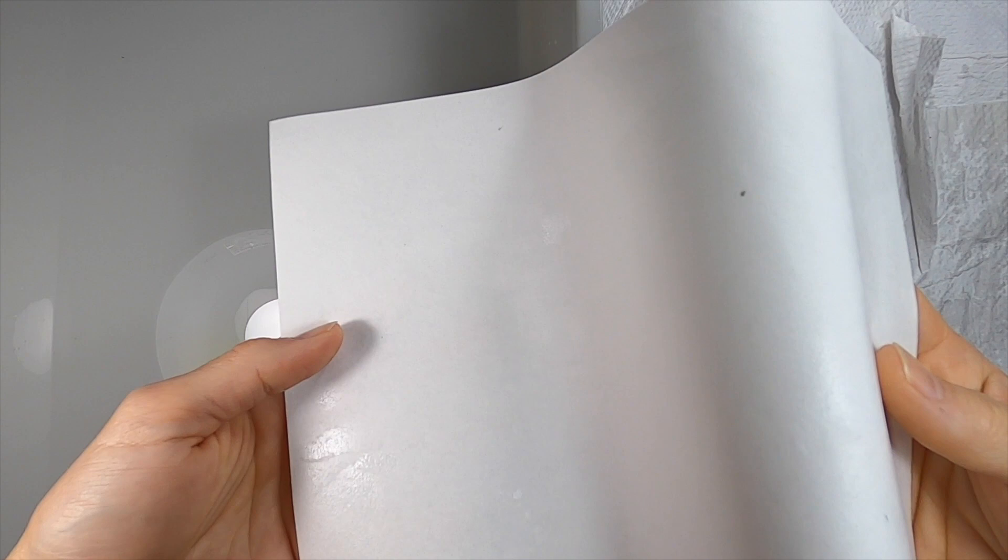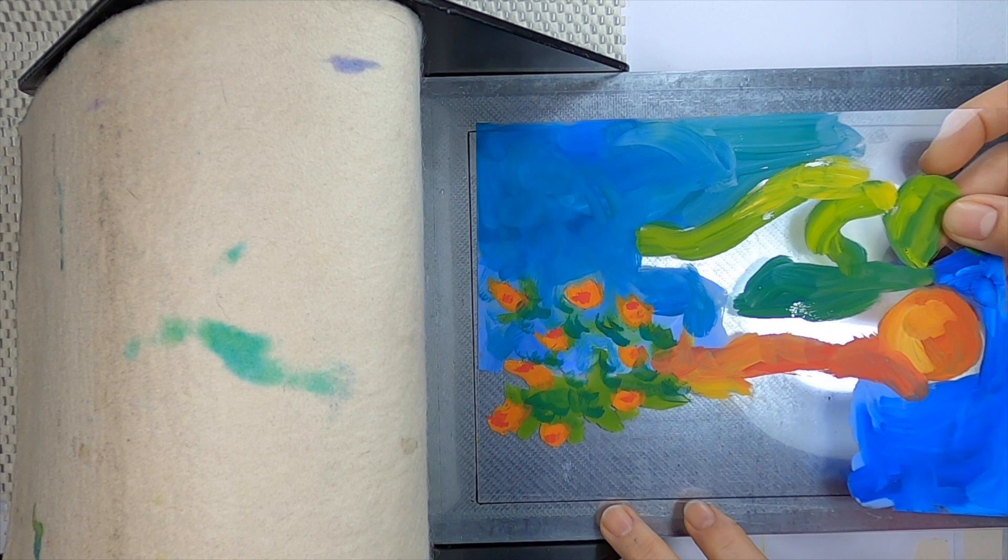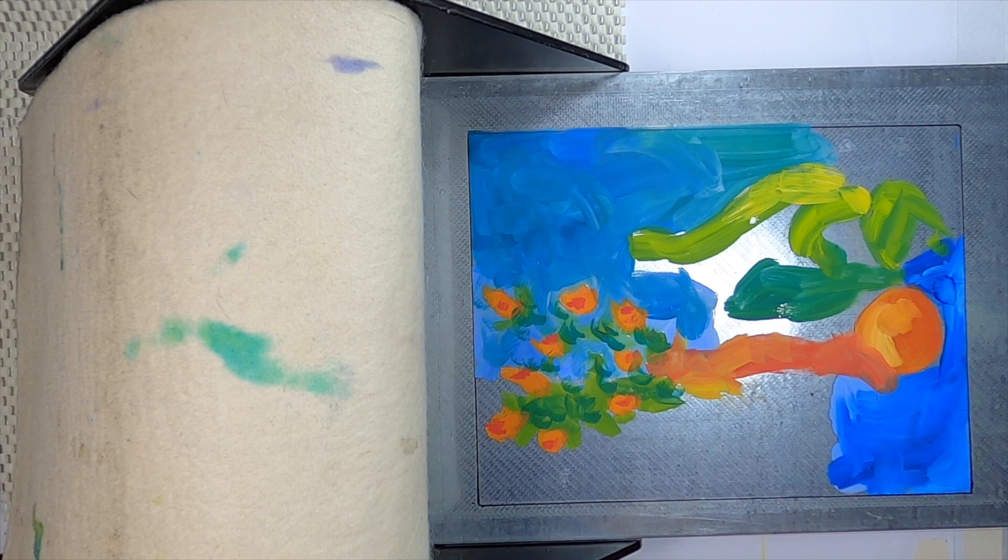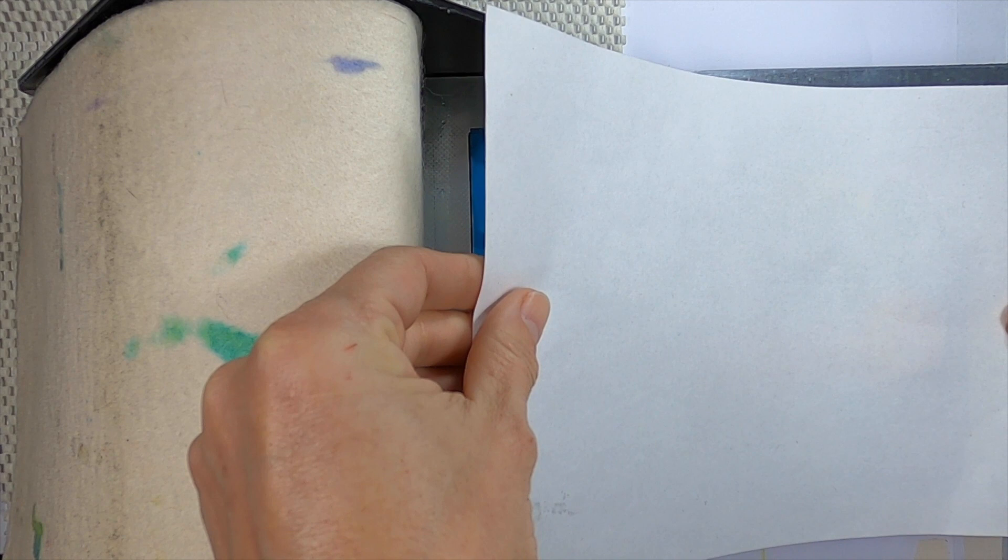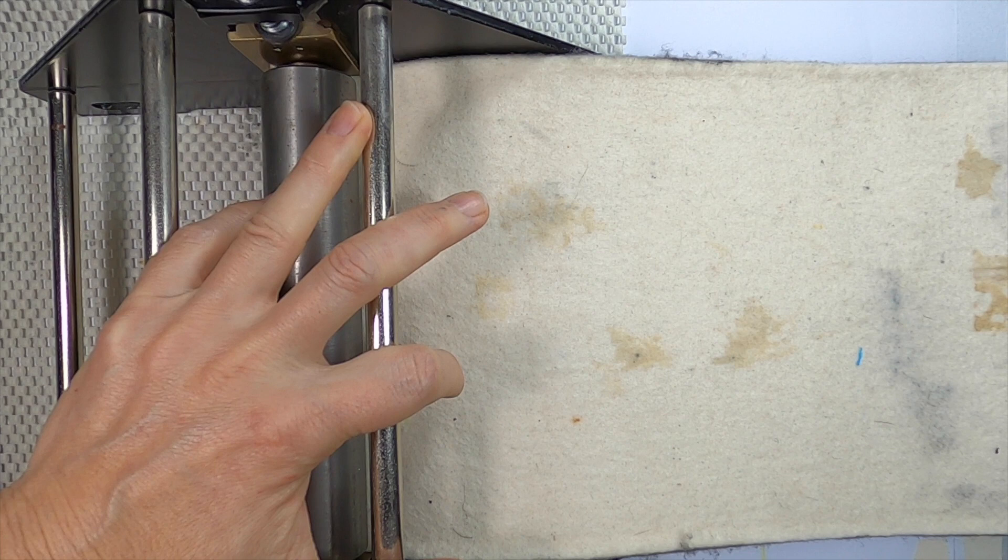Make sure your registration plate is on the bed of the press and lay the painted plate paint side up on the registration plate. Then take your damp paper and line it up with the edges of the registration plate. The press needs to be very tight, so it should take some effort to wind it through.